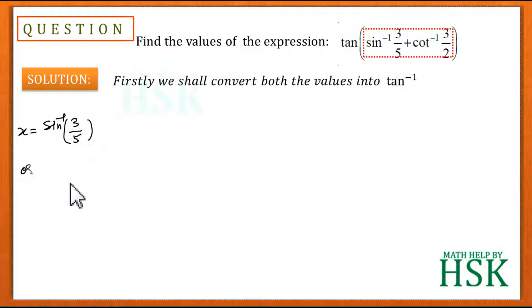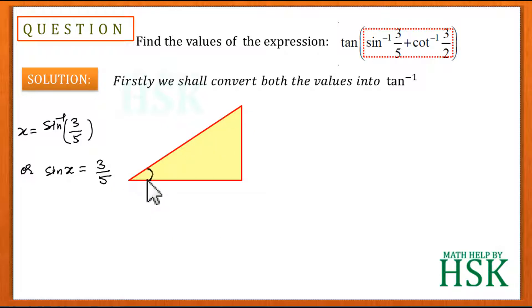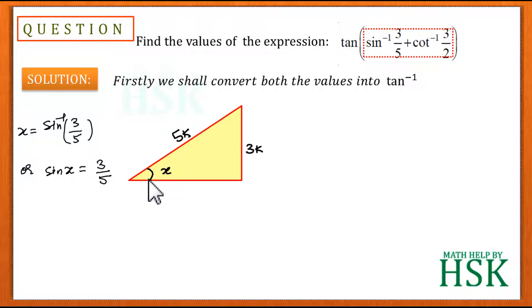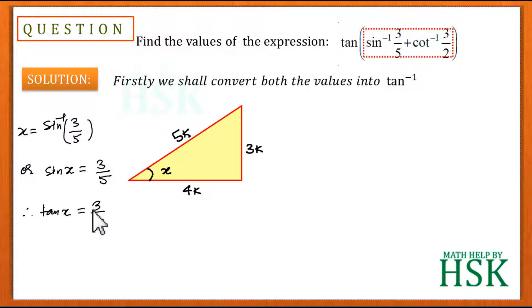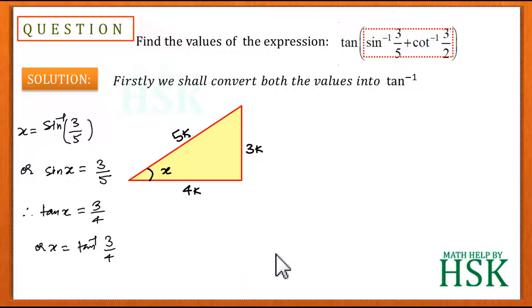Taking the first value: let x = sin⁻¹(3/5), so sin x = 3/5. Representing this with a right-angle triangle where angle x is marked, since sin = perpendicular/hypotenuse, we write the opposite side as 3k and hypotenuse as 5k, giving base = 4k by Pythagoras. Therefore tan x = 3k/4k = 3/4, meaning x = tan⁻¹(3/4). This converts sin⁻¹ into tan⁻¹.